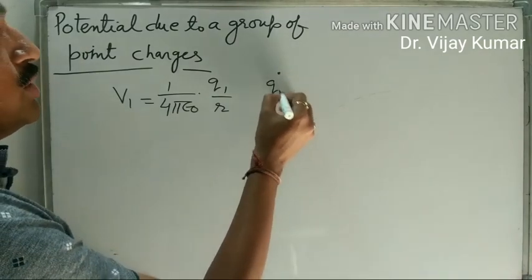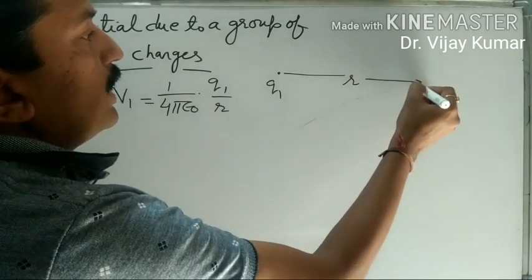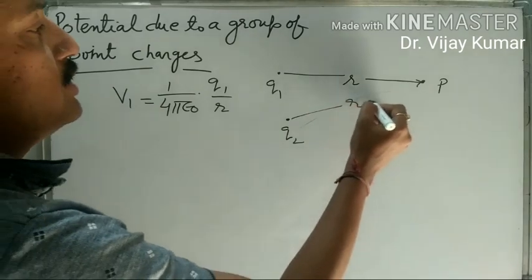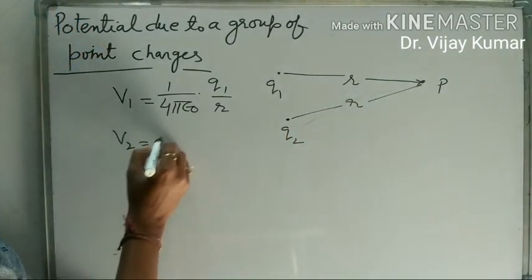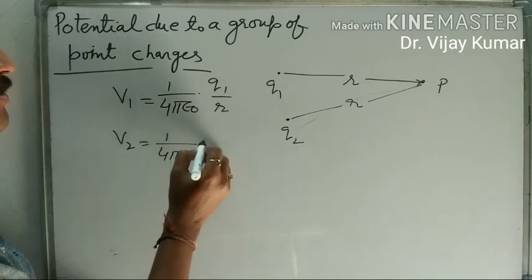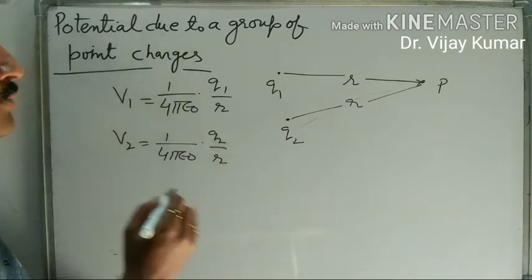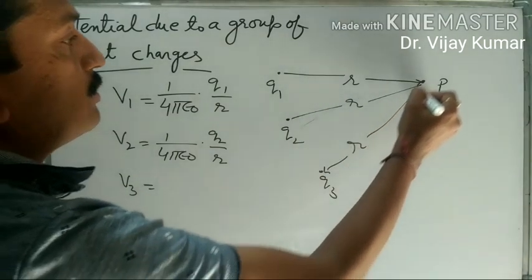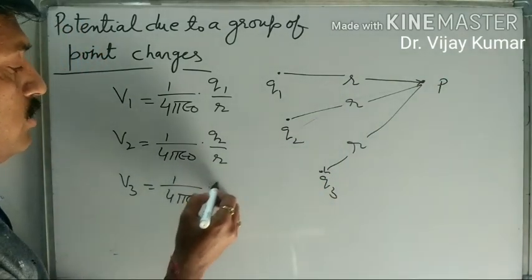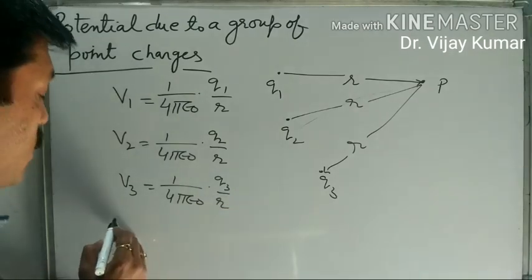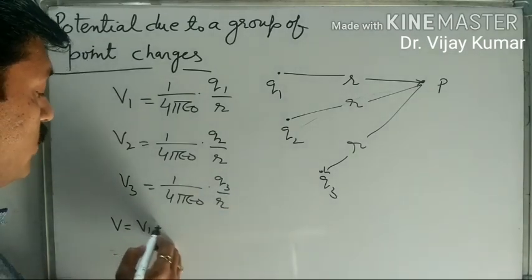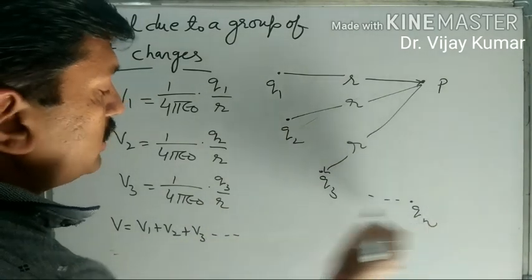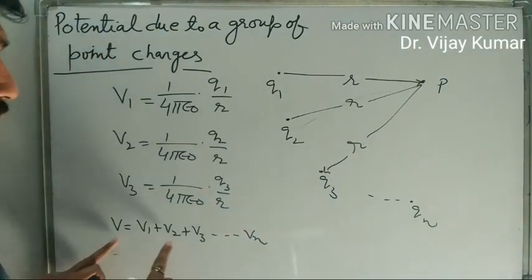Suppose this is Q1 charge and at R distance there is a point P. Due to Q2 charge, again distance is R, V2 is equal to 1 upon 4 pi epsilon naught Q2 upon R. Due to charge Q3, again distance is R, it should be 1 upon 4 pi epsilon naught Q3 upon R. Total potential is V1 plus V2 plus V3, up to VN if there are N charge particles. Electric potential is a scalar quantity.